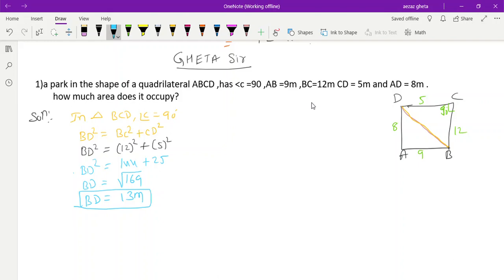Now you can find out area of triangle BCD using half into base into height. Area of triangle BCD = ½ × base × height = ½ × 5 × 12 = 30 m². We got one area, this is 30. Now we will find area of ABD.